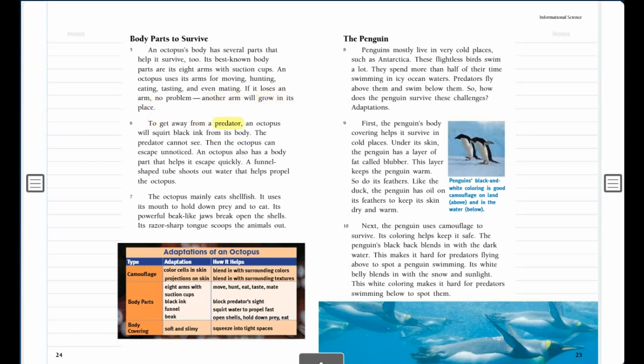To get away from a predator, an octopus will squirt black ink from its body. The predator cannot see. Then the octopus can escape unnoticed. An octopus also has a body part that helps it escape quickly. A funnel-shaped tube shoots out water that helps propel the octopus.